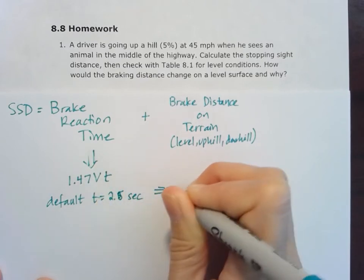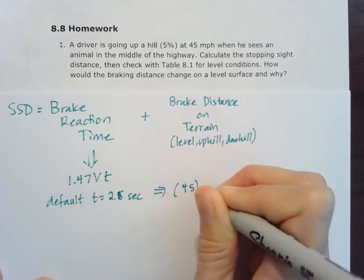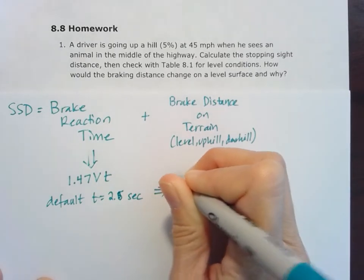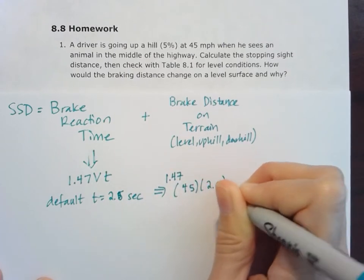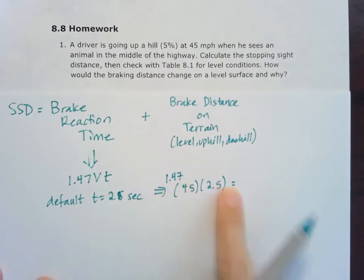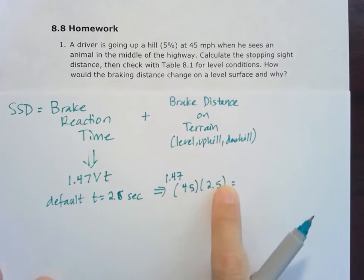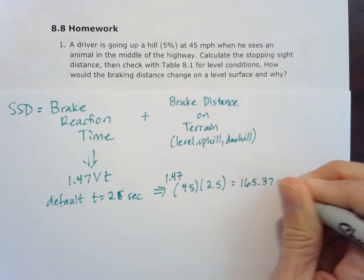So that becomes, in this case, 45 miles per hour. That 1.47 conversion factor times 45 times the 2.5 seconds. I'm not going to put units in there because that 1.47 is there to help us convert miles per hour and seconds so we get out feet. So when I do that math, 1.47 times 45 times 2.5, I do get 165.375 feet.